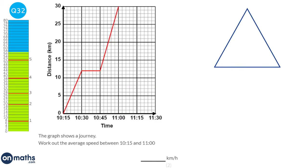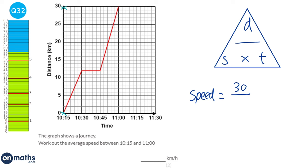Average speed is total distance over total time. The distance goes from 0 to 30, so the total distance is 30. The time starts at 10:15 and ends at 11:00, which is 45 minutes or 0.75 hours. So 30 divided by 0.75 gives 40. The answer is 40 kilometres per hour.